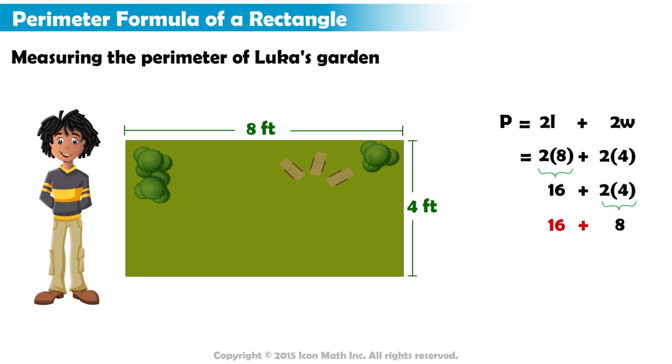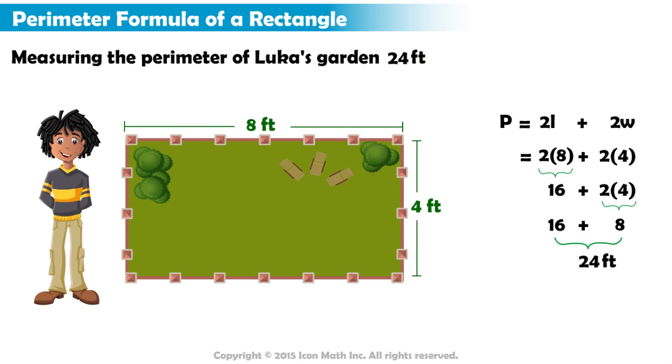Finally, he adds 16 and 8 to get 24. So, the perimeter of Luca's garden is 24 feet, which means Luca will need 24 feet of fencing.